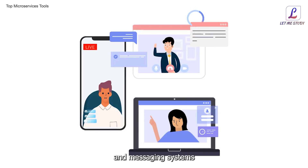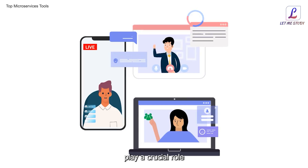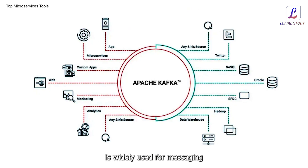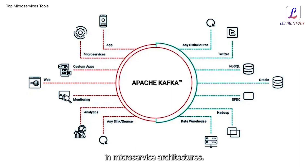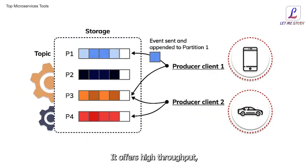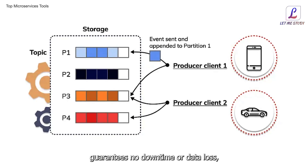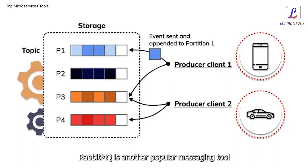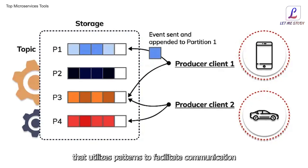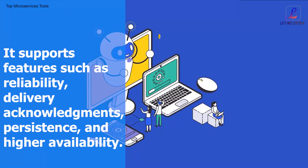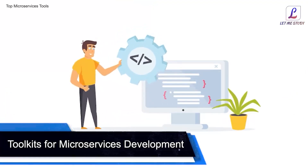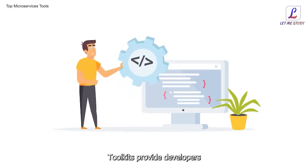Messaging systems for microservices: effective communication is vital in microservice architectures, and messaging systems play a crucial role. Apache Kafka, a distributed streaming platform, is widely used for messaging in microservice architectures. It offers high throughput, guarantees no downtime or data loss, and is highly scalable. RabbitMQ is another popular messaging tool that utilizes patterns to facilitate communication between microservices, supporting features such as reliability, delivery acknowledgments, persistence, and high availability.